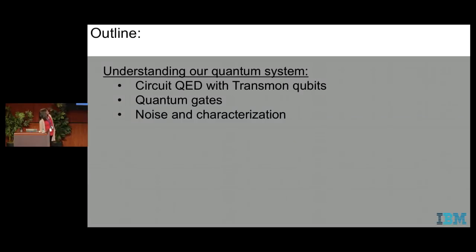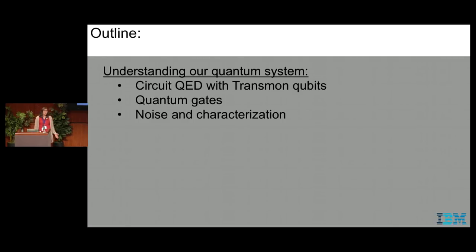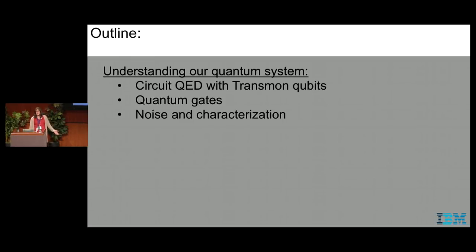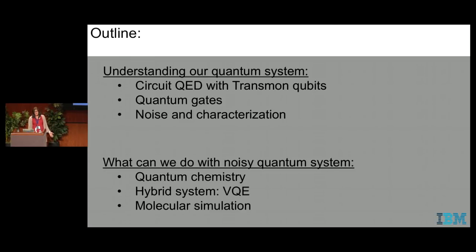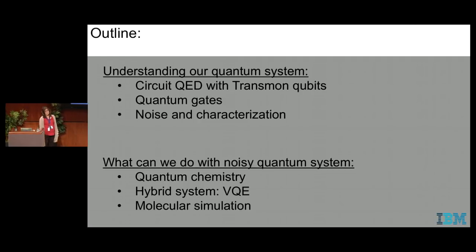A very brief outline: the main part of this talk is going to be understanding our quantum system and discussing different things. I know that the topic of this workshop is quantum applications, near-term applications, or approximate quantum computing. So briefly, I will talk about what we can do with a noisy quantum system, and I'm just going to talk briefly on our recent results on quantum chemistry.